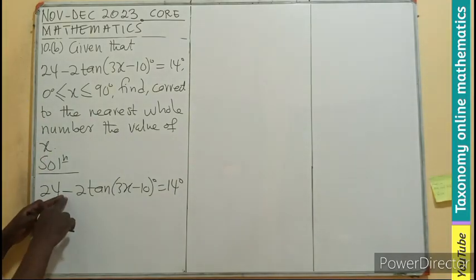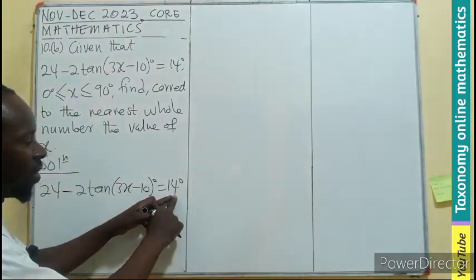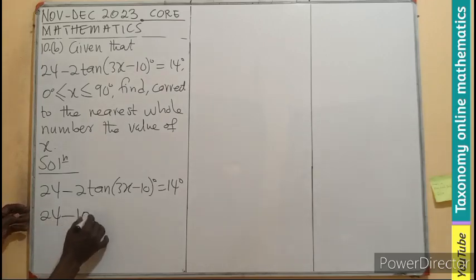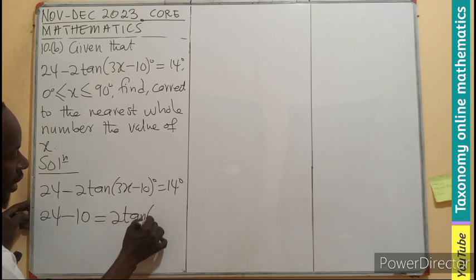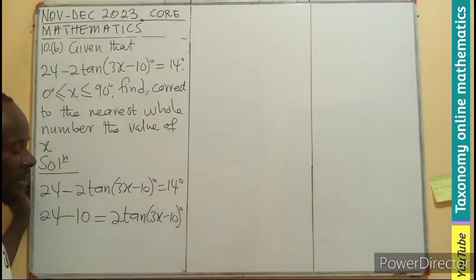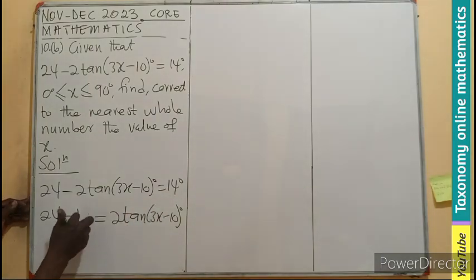Try to group like this. This negative can be sent to the right to become positive. 14 also sent to become negative. So 24 minus 14 equals 2 tan(3x minus 10 degrees). I believe this is 14, so let's put it there.